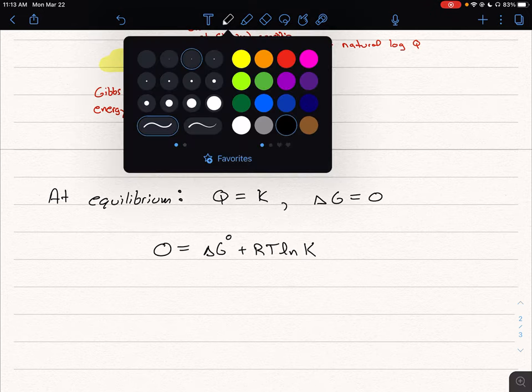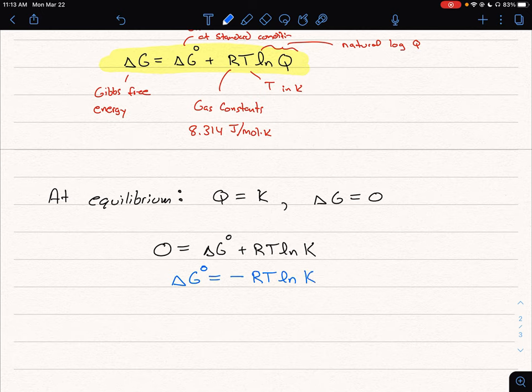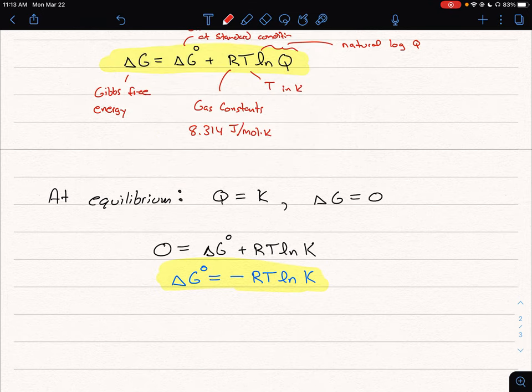And now we can rearrange our equation and I'm going to say delta G naught is equal to minus RT ln of K. And what we just did is we now have an expression that will relate our delta G naught to our equilibrium constant.